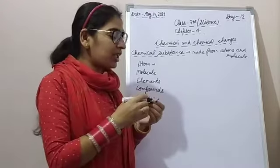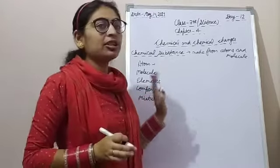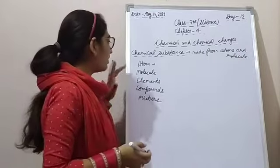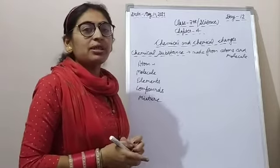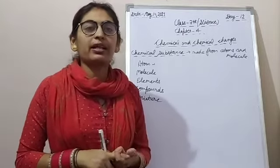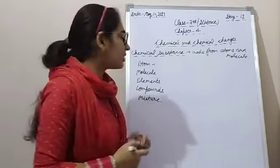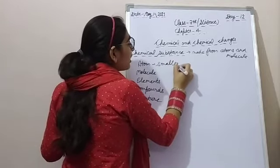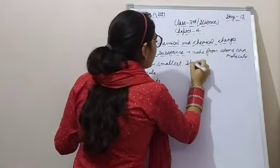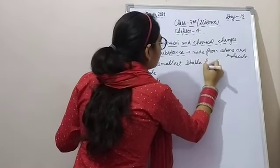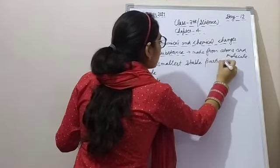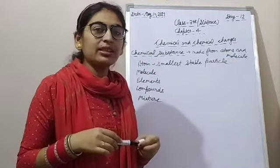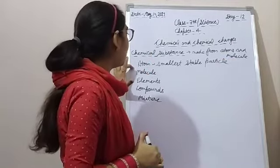Ab aapke mind me question aaya hoga ki atom aur molecule se to bante hain — what are atoms and what are molecules? An atom is the smallest stable particle of a chemical substance. Koi bhi chemical substance hai, uska jo smallest stable particle hoga, usse hum atom kehte hain.